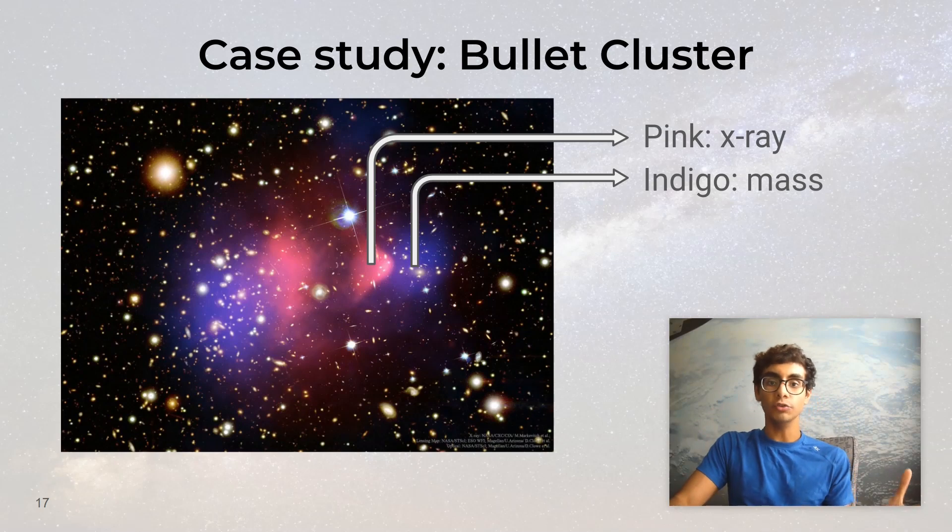But we can also use gravitational lensing to learn more about this DSO. Remember that gravitational lensing is when a massive object bends the light coming from behind it, therefore distorting the image of whatever is behind it. In this case, by observing the light and carefully figuring out how much it bent, astrophysicists can figure out where the mass is. That's shown in blue. What's surprising is that it doesn't line up with the pink, which is where all the hot gas is.